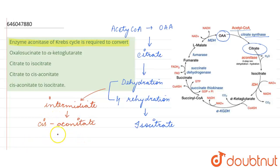so the intermediate that is formed is called cisaconitate. Cisaconitate is the intermediate product that forms during the dehydration and rehydration of citrate and then this is converted into isocitrate. So this whole process is brought about by the enzyme called aconitase.